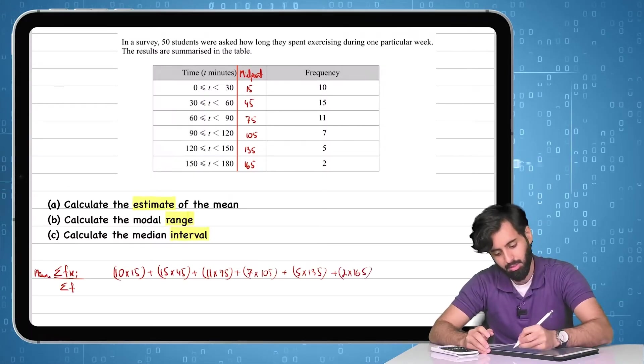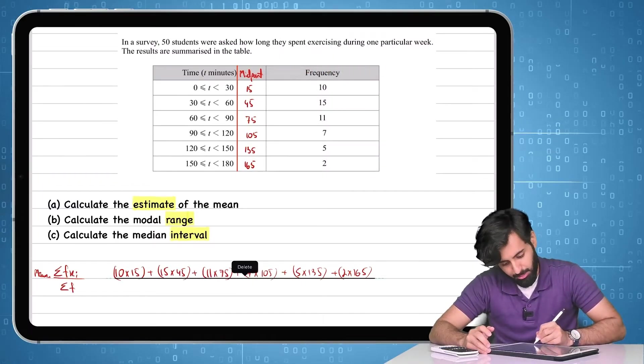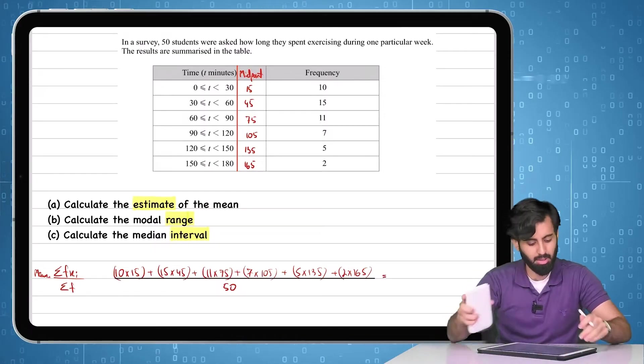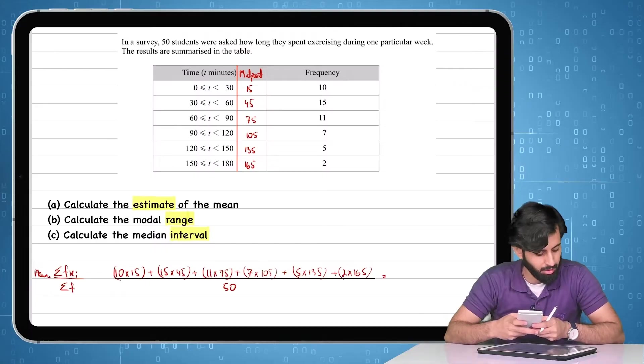And if you read the question, we may be able to find out what the total frequency is. In a survey 50 students, yep, that means that the total frequency is in fact equal to 50. So I'm going to multiply and sum these values in my calculator directly to save time.